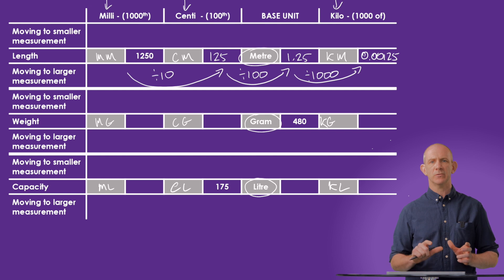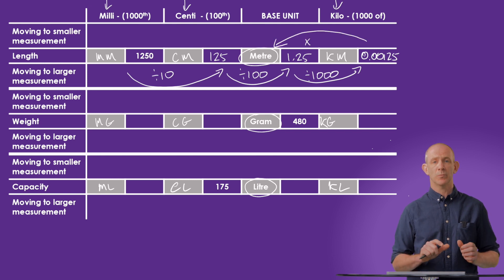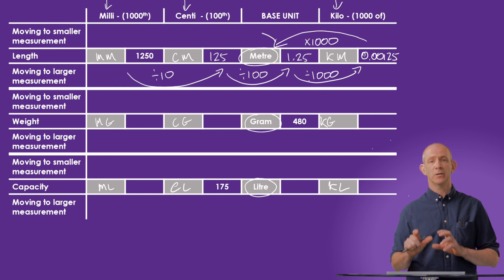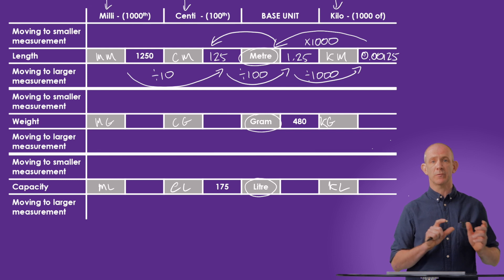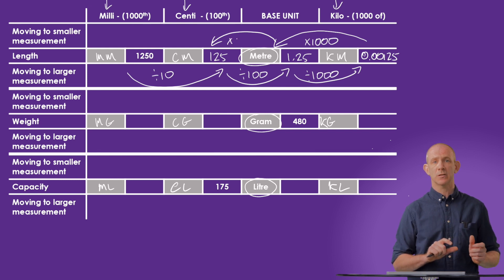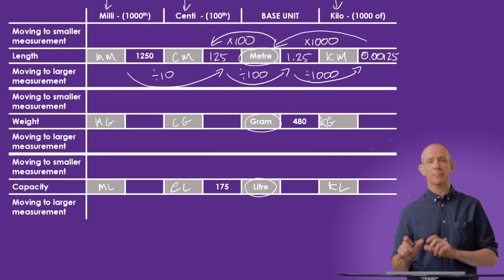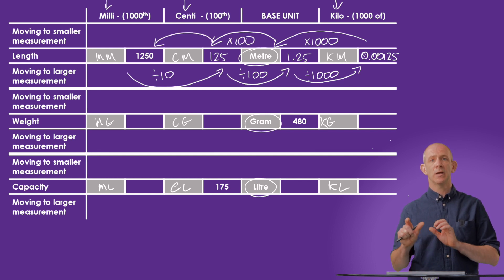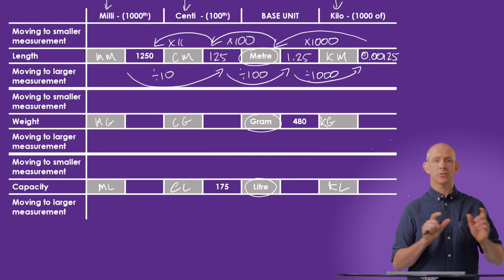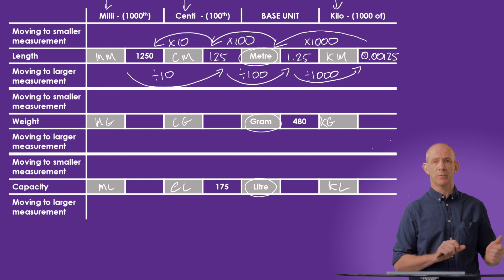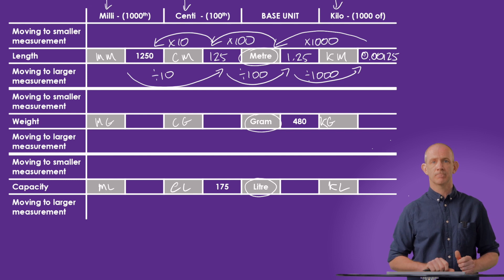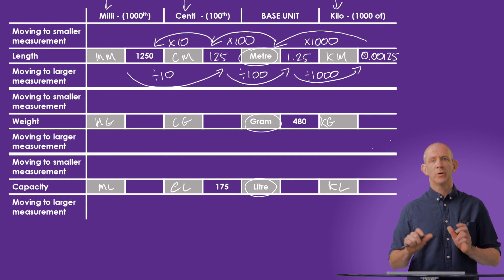We can double-check this by converting back again. Multiplying by 1000 gives us 1.25 meters, multiplying that by 100 gives us 125 centimeters, and multiplying by 10 gives us 1250 millimeters. We can apply this same process to weight and capacity.